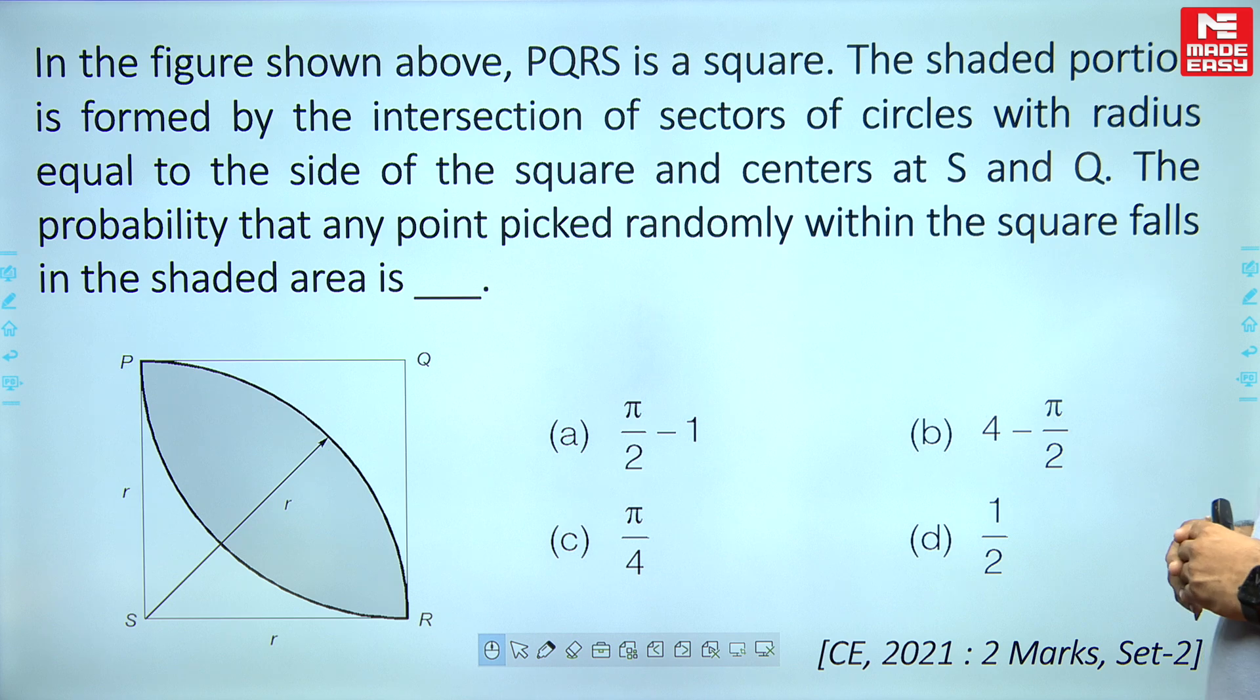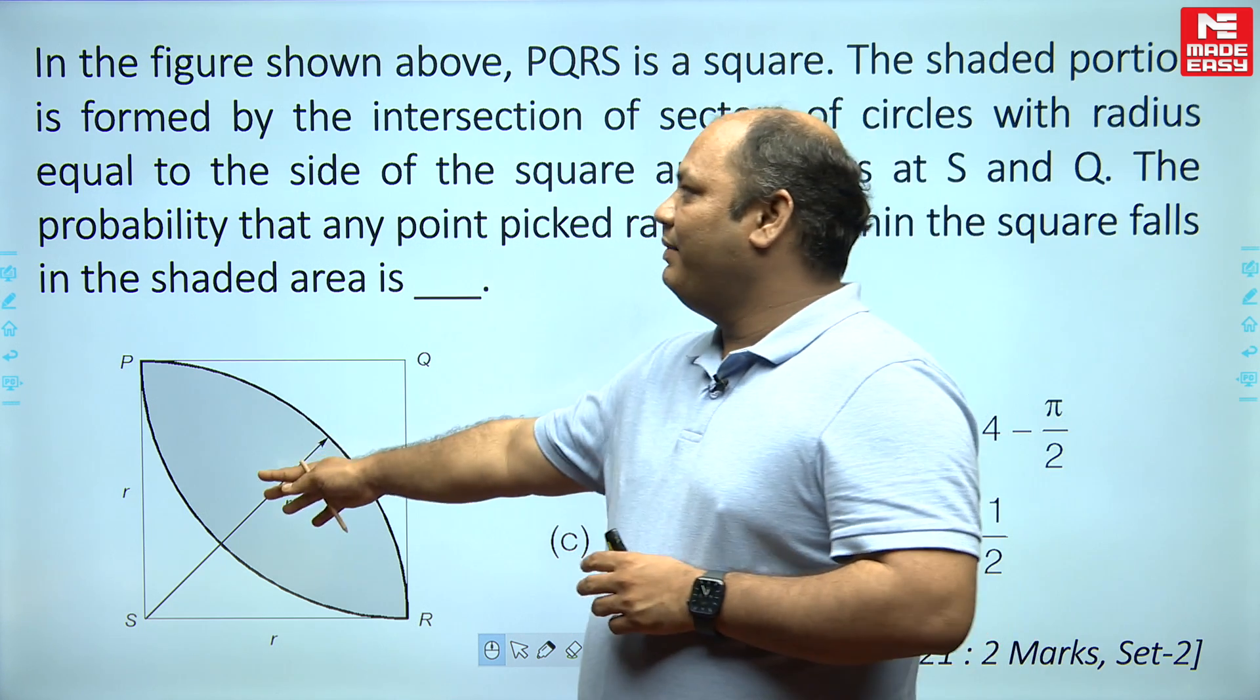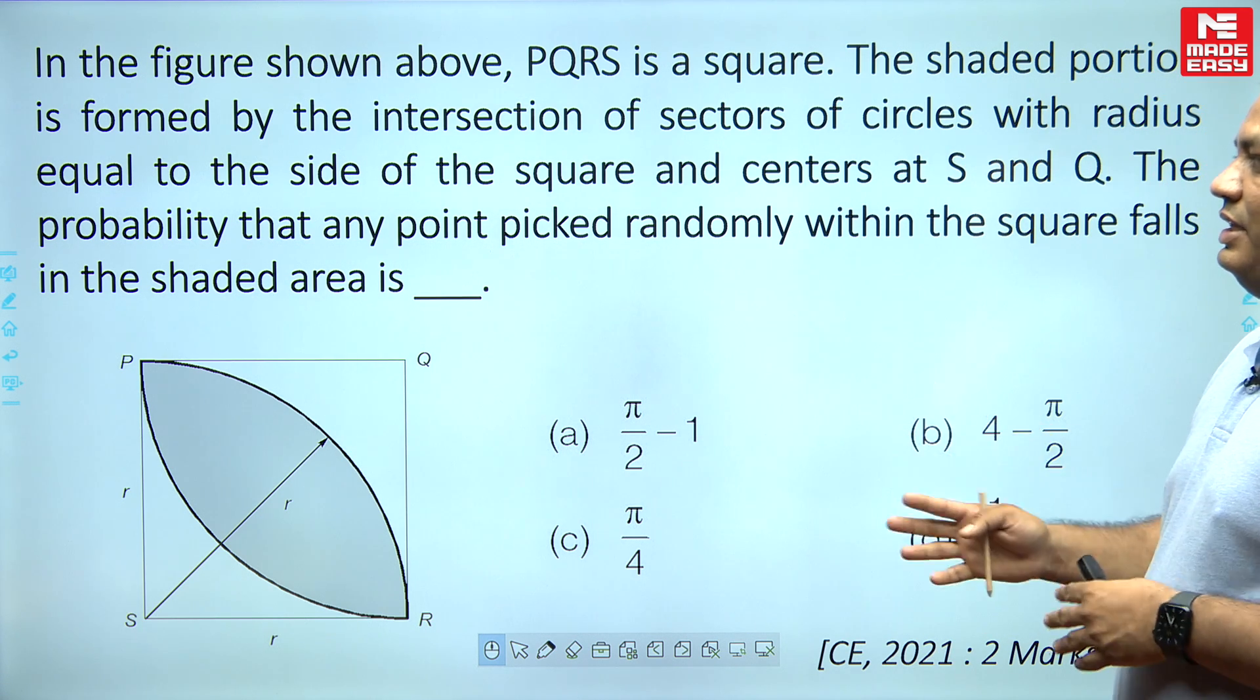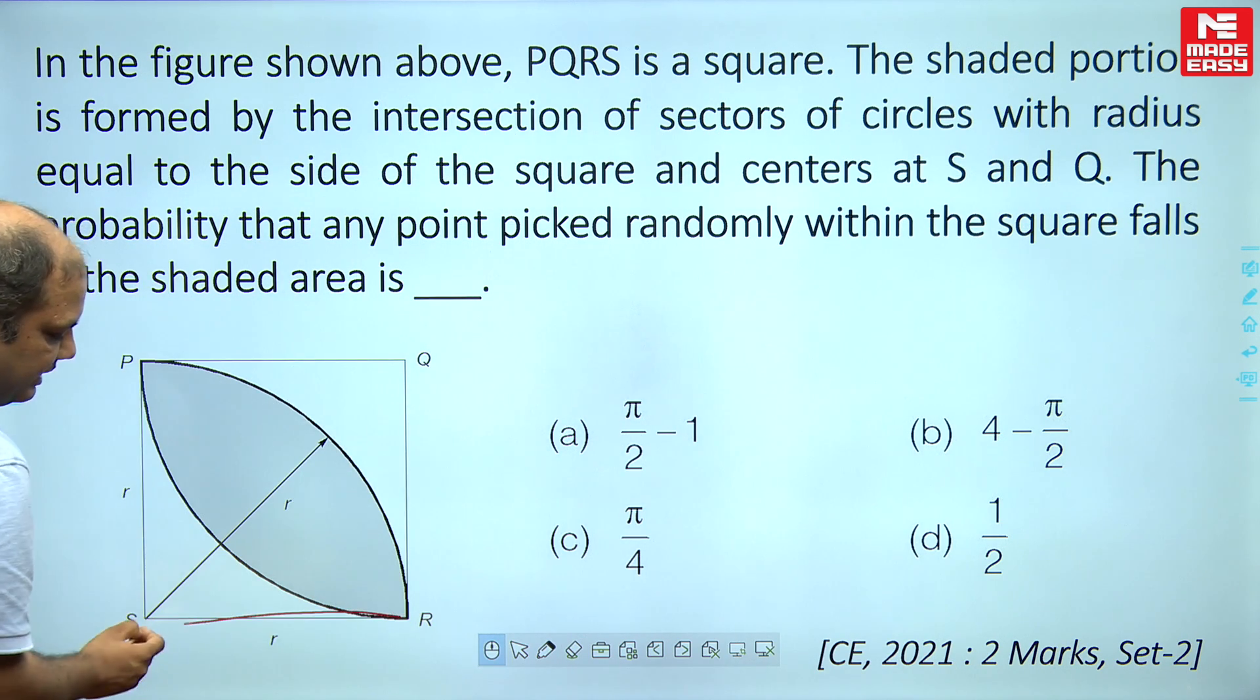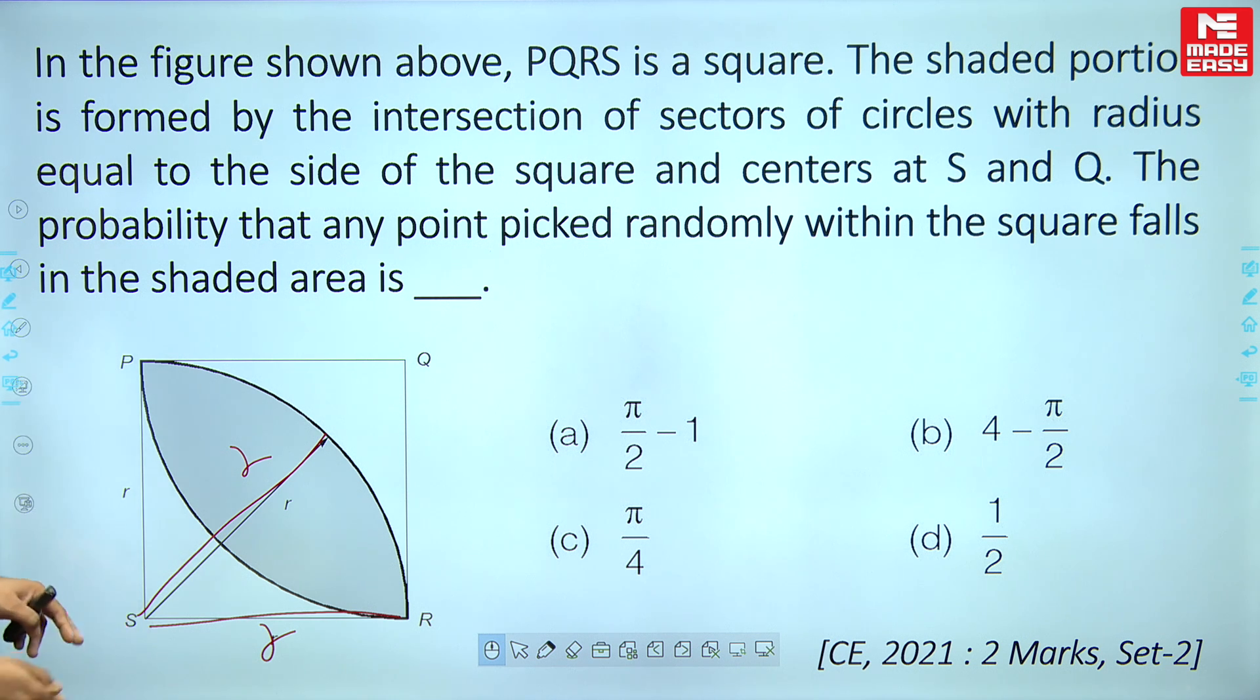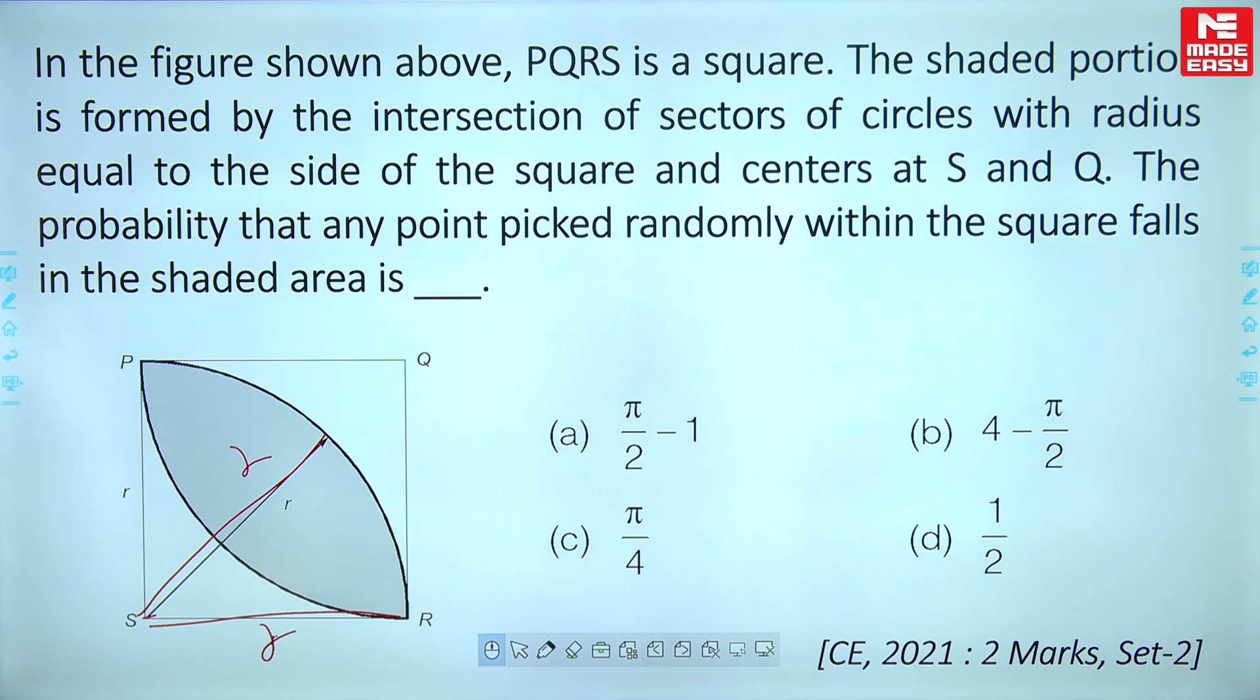In the figure shown above, PQRS is a square. The shaded portion is formed by the intersection of two sectors of circles with radius equal to the side of the square. So if the side is R, you can see the radius is also R. Keeping S as center, you have one circle with this quadrant drawn. Similarly at Q with another circle quadrant drawn.